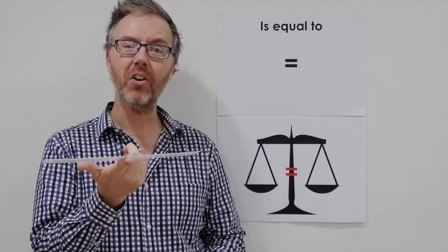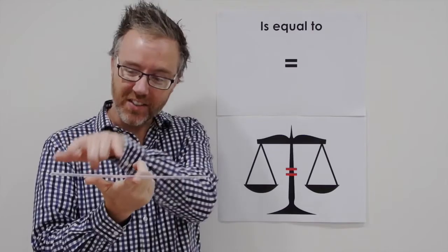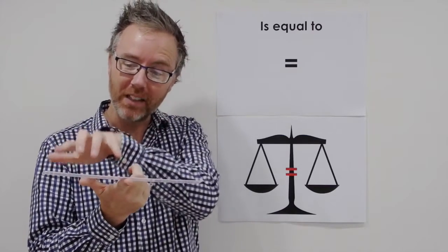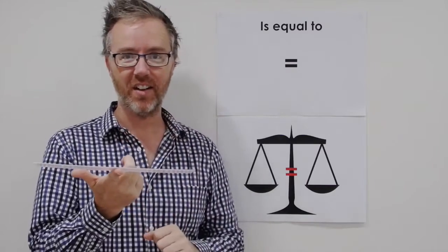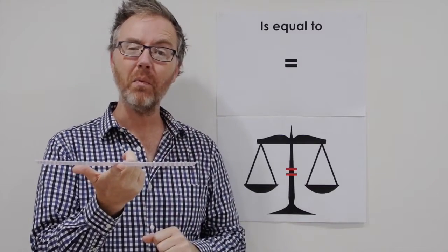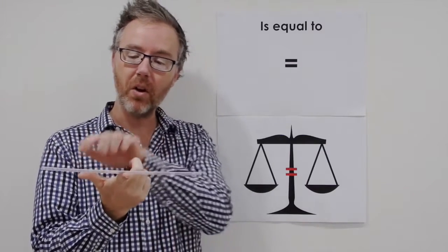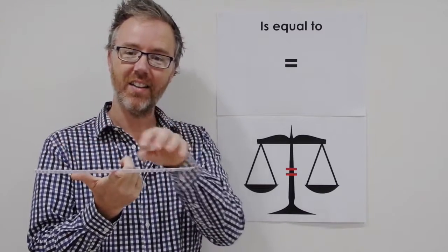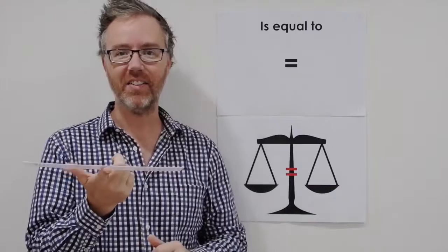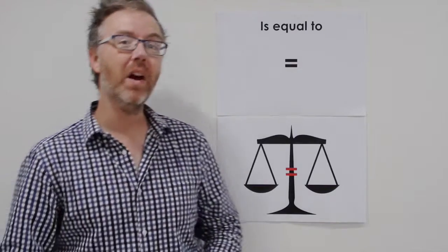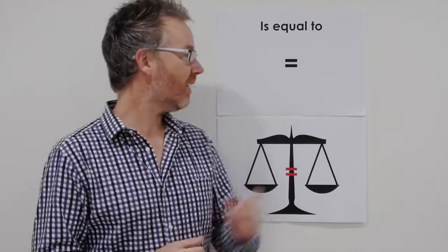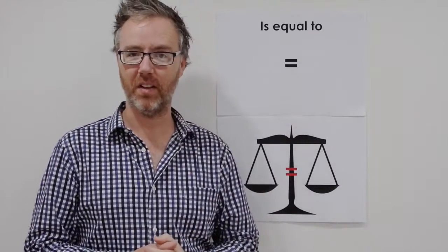Hopefully you know it's because this side of the ruler is the same length as this side of the ruler. So when we say it's balanced, both sides are even. The weight, the length of the side is the same. Now, today, we're going to be using that knowledge to understand what the equal sign means.